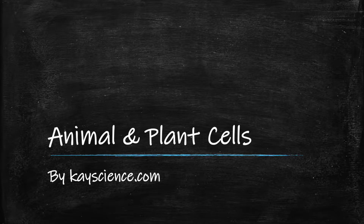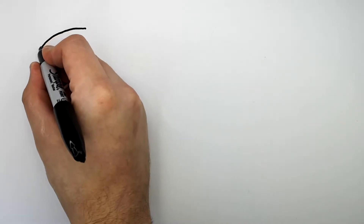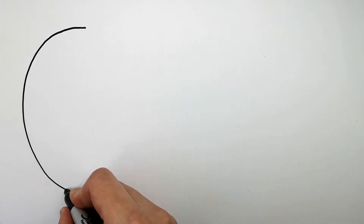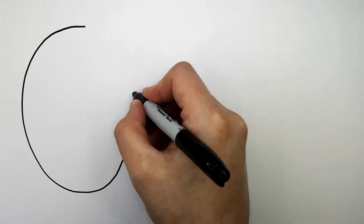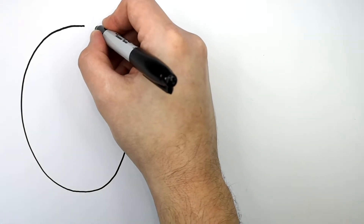Animal and plant cells by kscience.com. What I'm drawing here is an animal cell, and this is the cell membrane of an animal cell.